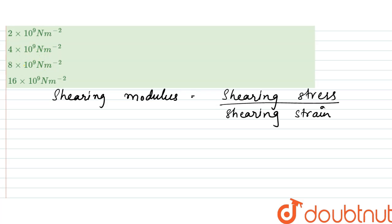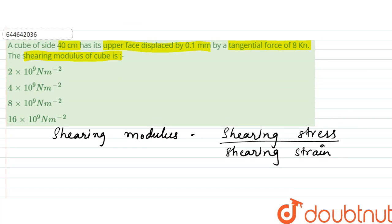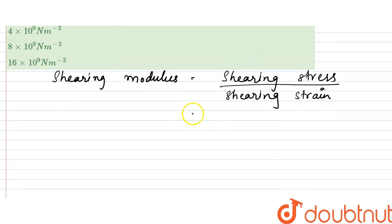is that stress, the tangential force per unit area, would be equal to force per unit area, and the strain would be delta L by L.